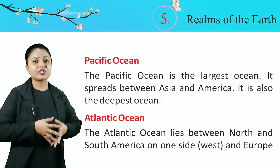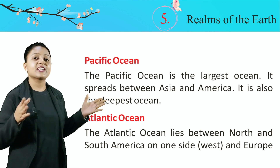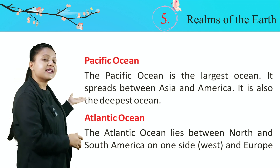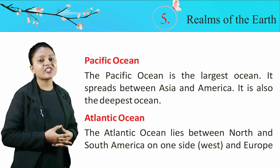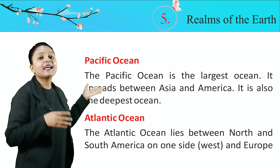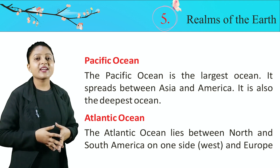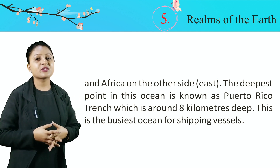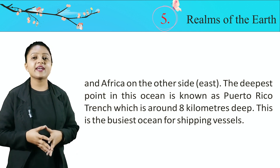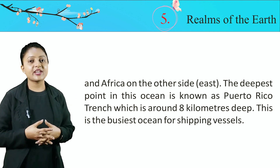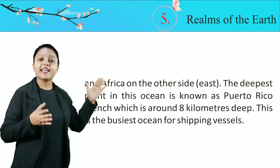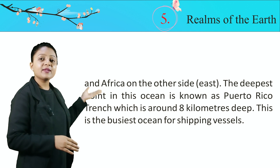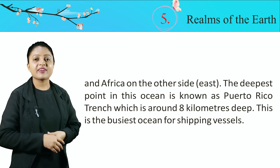Let's first talk about the Pacific Ocean. The Pacific Ocean is the largest ocean. It spreads between Asia and America. It is also the deepest ocean. Jo Pacific Ocean hai yeh sabse gehra ocean hai aur Asia aur America ke beech mein lie karta hai. The Atlantic Ocean lies between North and South America on one side (west) and Europe and Africa on the other side (east). The deepest point in this ocean is known as the Puerto Rico Trench, which is around 8 kilometers deep. This is the busiest ocean for shipping vessels.